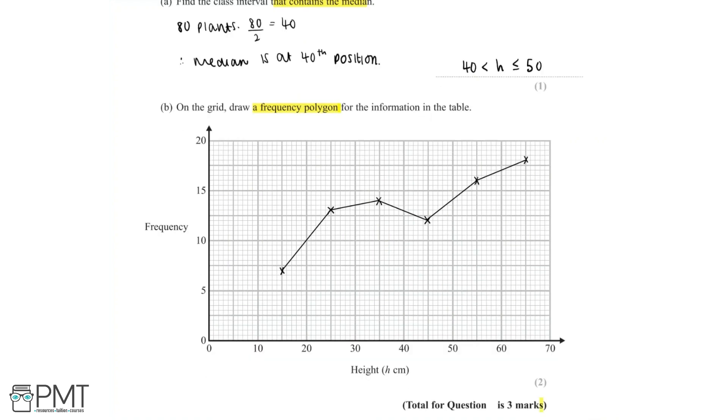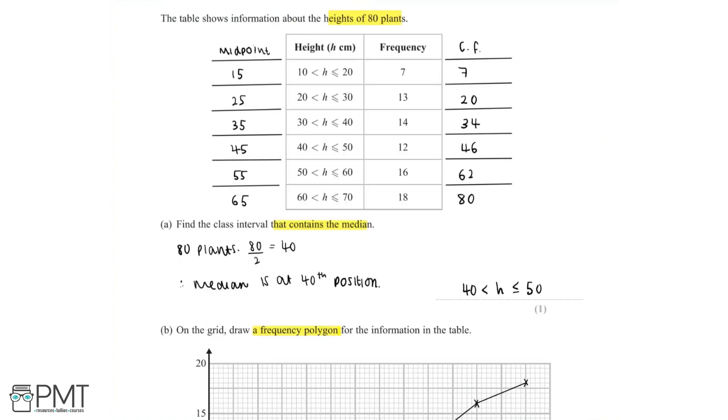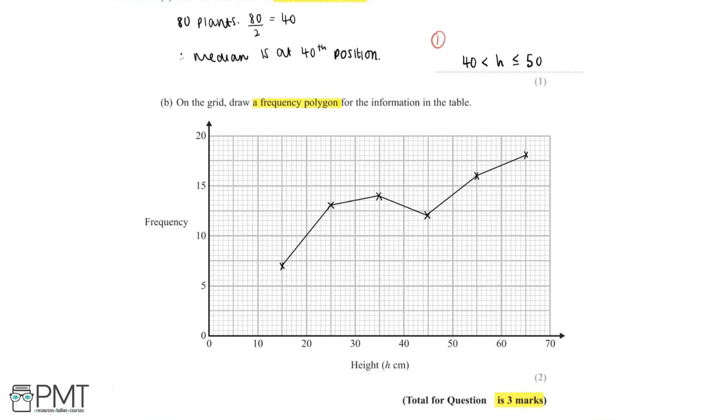Now this question is worth three marks. We get the first mark for saying that the class interval that contains the median is between 40 and 50 centimeters. We get the second mark in part B for plotting all of the correct coordinates in our frequency polygon. And we get the third and final mark for joining these points together using straight lines. And so we've now achieved the full three marks needed in this question.